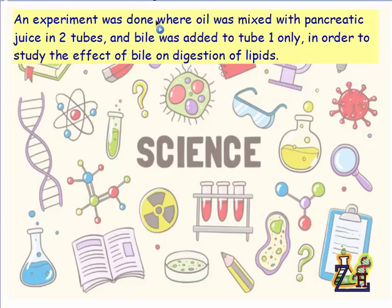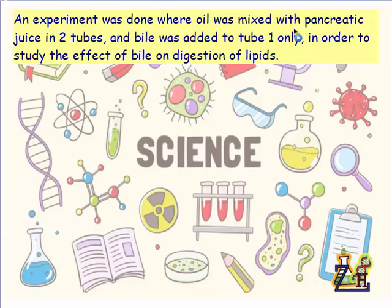An example of analyzing an experiment. We have an experiment where oil was mixed with pancreatic juice in two tubes, and bile was added to tube one only, in order to study the effect of bile on digestion of lipids. Before we start to analyze, we have to understand the given of the experiment: two tubes with oil and pancreatic juice, and bile added to tube one only.